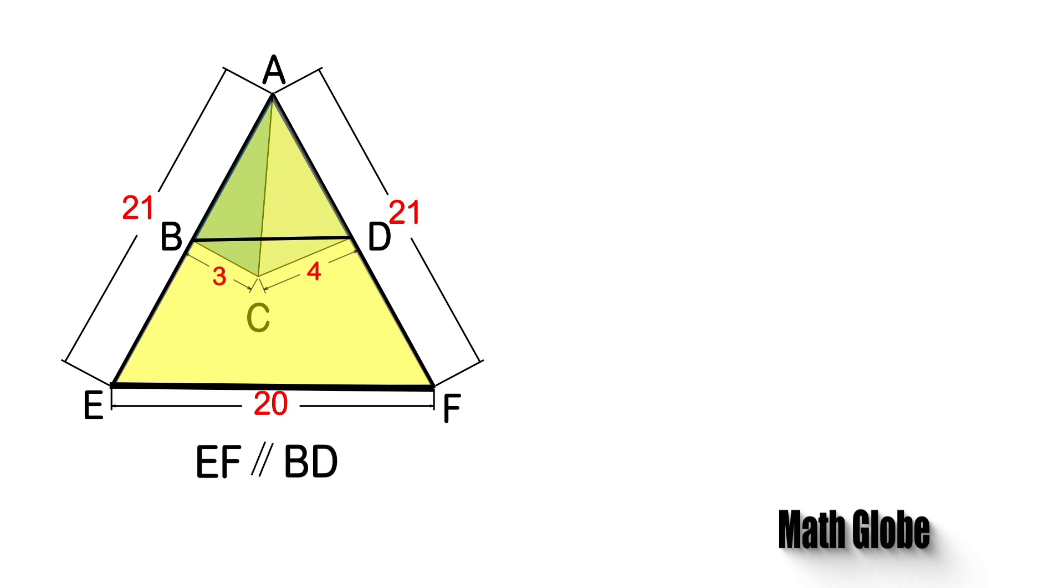From this, line segment AB will be equal to AD. As ABCD is a cyclic quadrilateral, the sum of opposite angles will be 180 degrees.